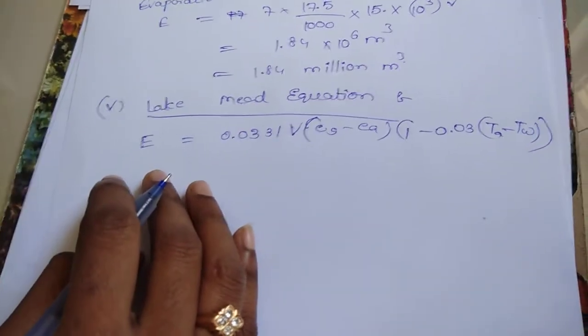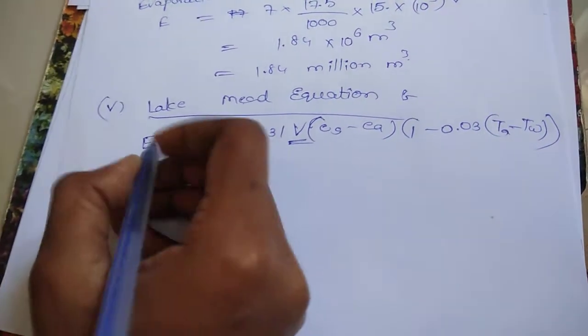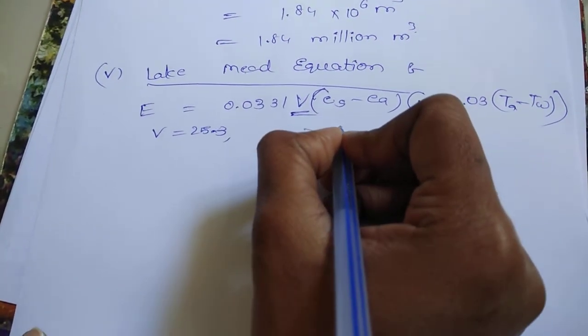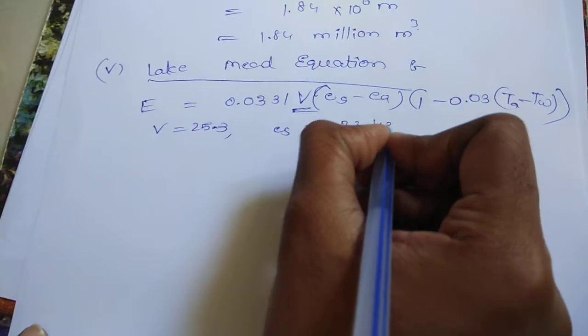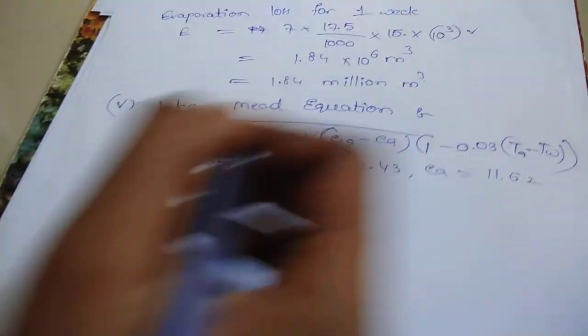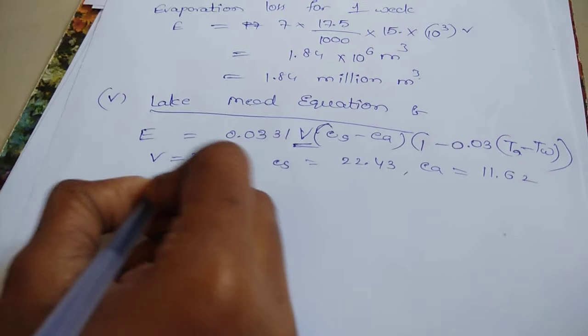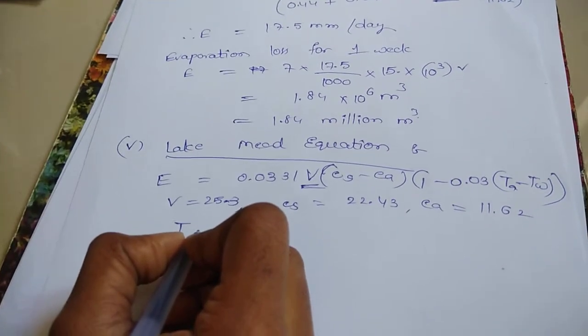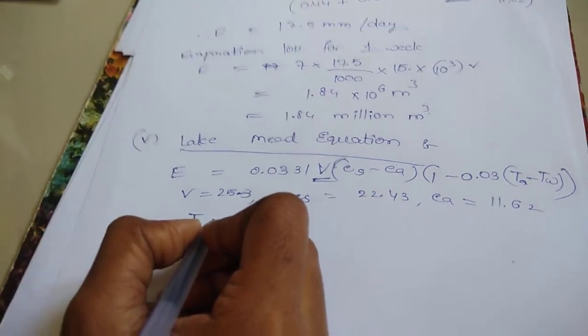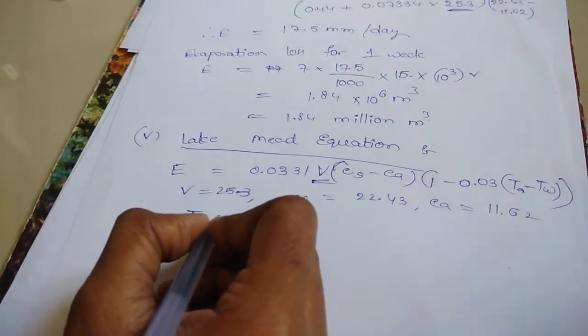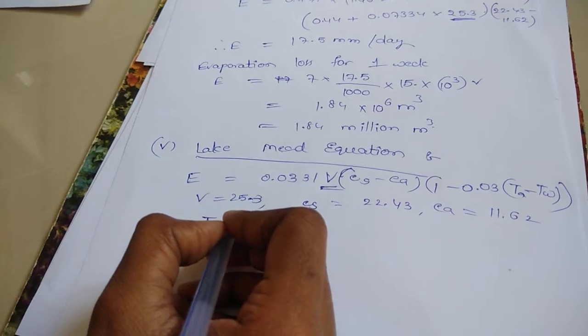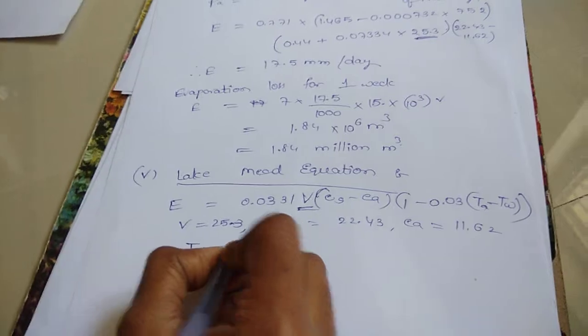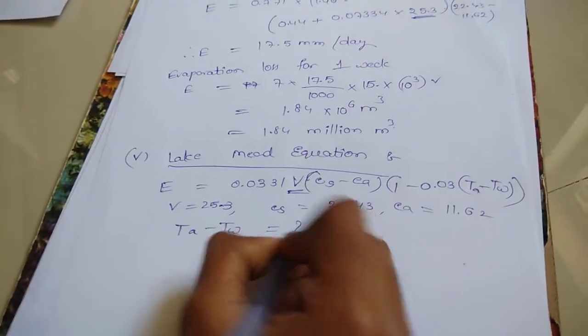Here, you know the value of V. V equal to 25.3. ES equal to 22.43. EA equal to 11.62. And TA minus TW value is equal to how much?